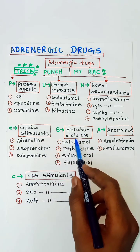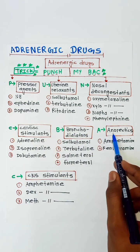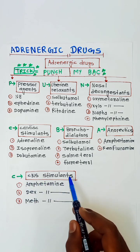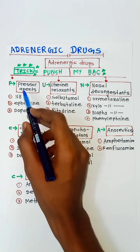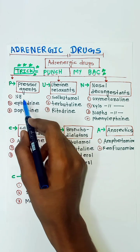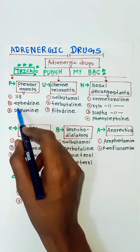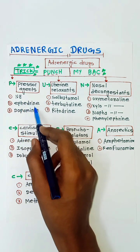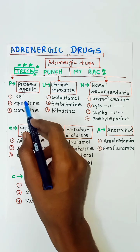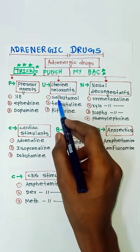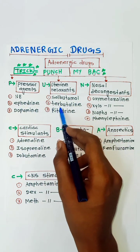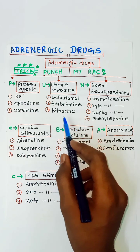B for bronchodilators, A for anorectics, and C for CNS stimulants. We will go one by one. In pressure agents we have norepinephrine, ephedrine, and dopamine. For uterine relaxants we have salbutamol, terbutaline, and ritodrine.